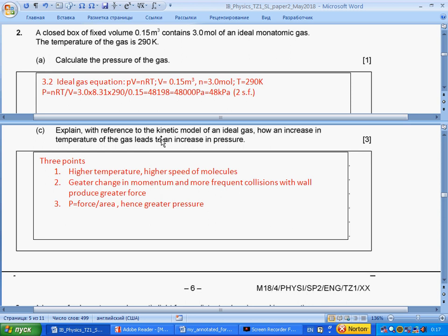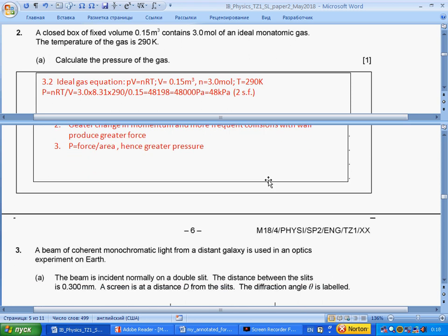Explain with reference to the kinetic model of an ideal gas how increase in temperature of the gas leads to increase in pressure. Three points. This is very easy points, but you should get all of them. Higher temperature, higher speed of molecules - one idea. Greater change in momentum and more frequent collision with wall produce greater force - another idea. Pressure equals force over area, hence greater pressure. Learn by heart and write and get these very easy points.